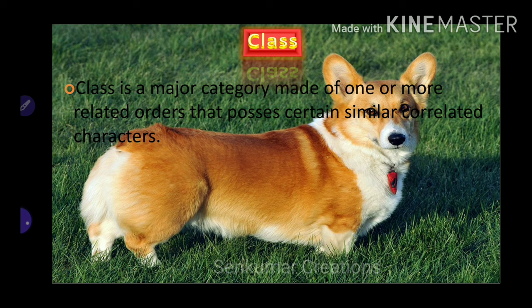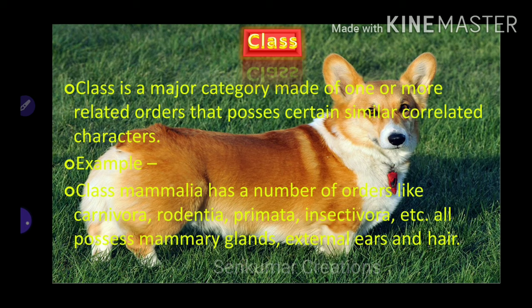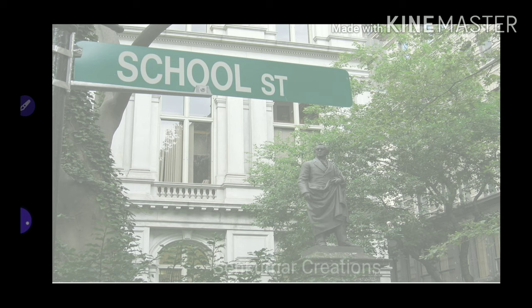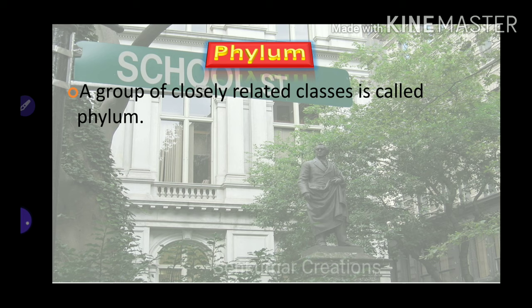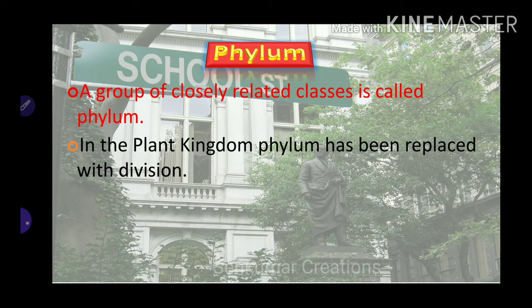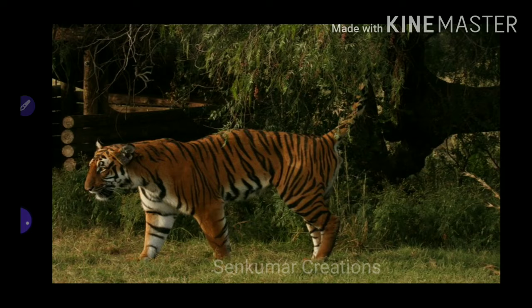Class is a major category made of one or more related orders that possess certain similar correlated characters. Example: class Mammalia has a number of orders like Carnivora, Rodentia, Primates, Insectivora, etc. — all possess mammary glands, external ears, and hair. A group of closely related classes is called a phylum. In the plant kingdom, phylum has been replaced with division. Example: Pisces, Amphibia, Reptilia, Aves, and Mammalia belong to the phylum Chordata.